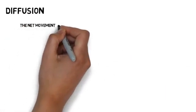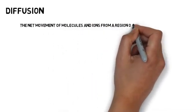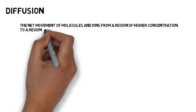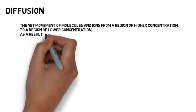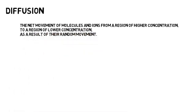Diffusion is the net movement of molecules and ions from a region of higher concentration to a region of lower concentration as a result of their random movement.